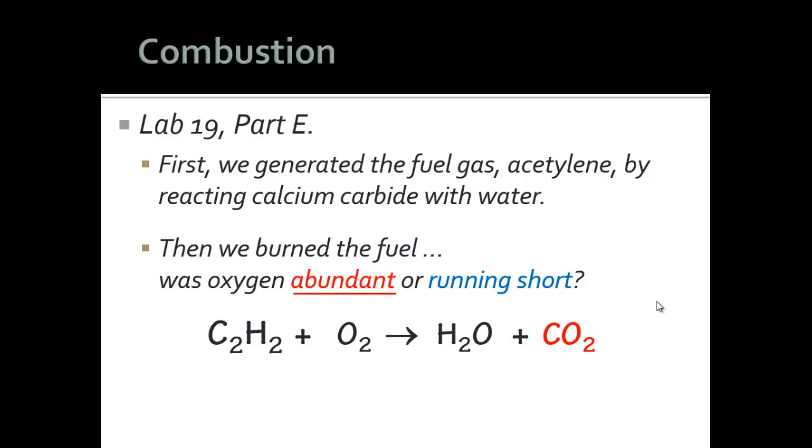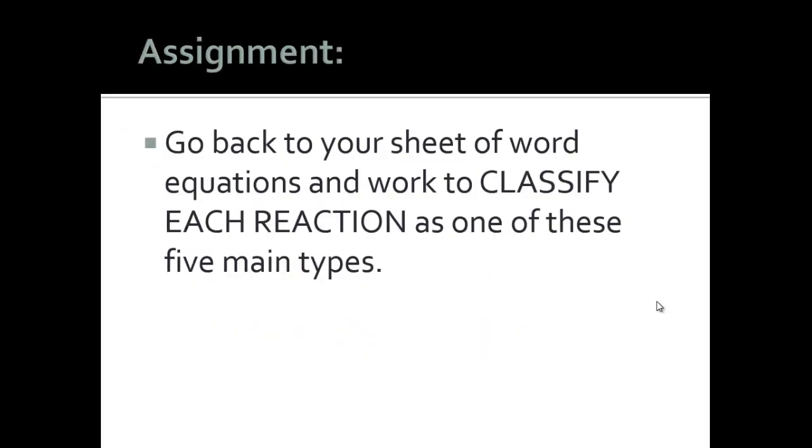That's your example equation for lab 19. You've got example equations for each of the reaction types. What I'd like you to do is go back to your reaction sheet. I've assigned you the first side, 1 through 13, to write those word equations into chemical equations and see if you can identify each of those first 13 as one of the five main types: single replacement, double replacement, synthesis, decomposition, or combustion.